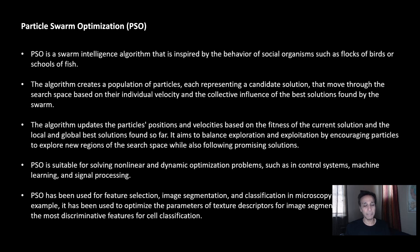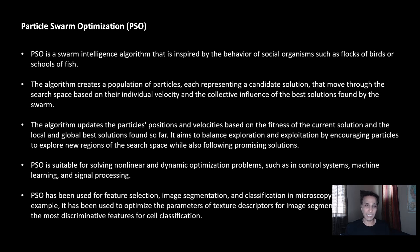Deep learning is replacing many traditional algorithms, but for optimization problems like feature selection or engineering problems, you should still consider these meta-heuristic approaches. I'll do a steel strength analysis using all three — I've already done it using genetic algorithms, and I'll apply the other two approaches to the same problem.